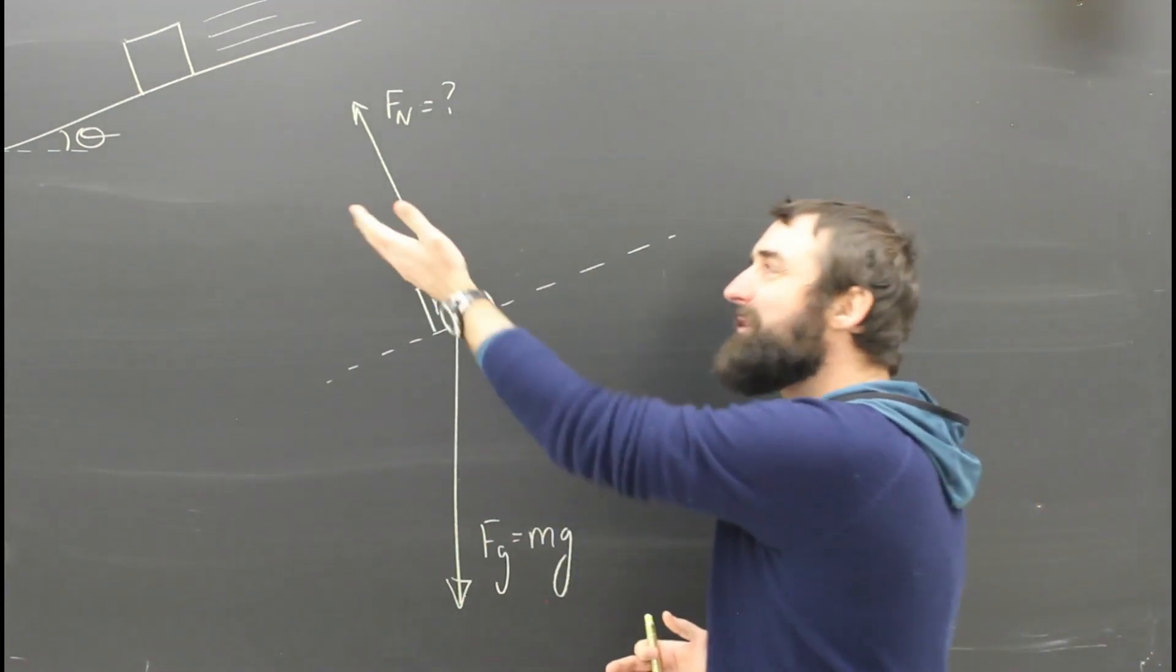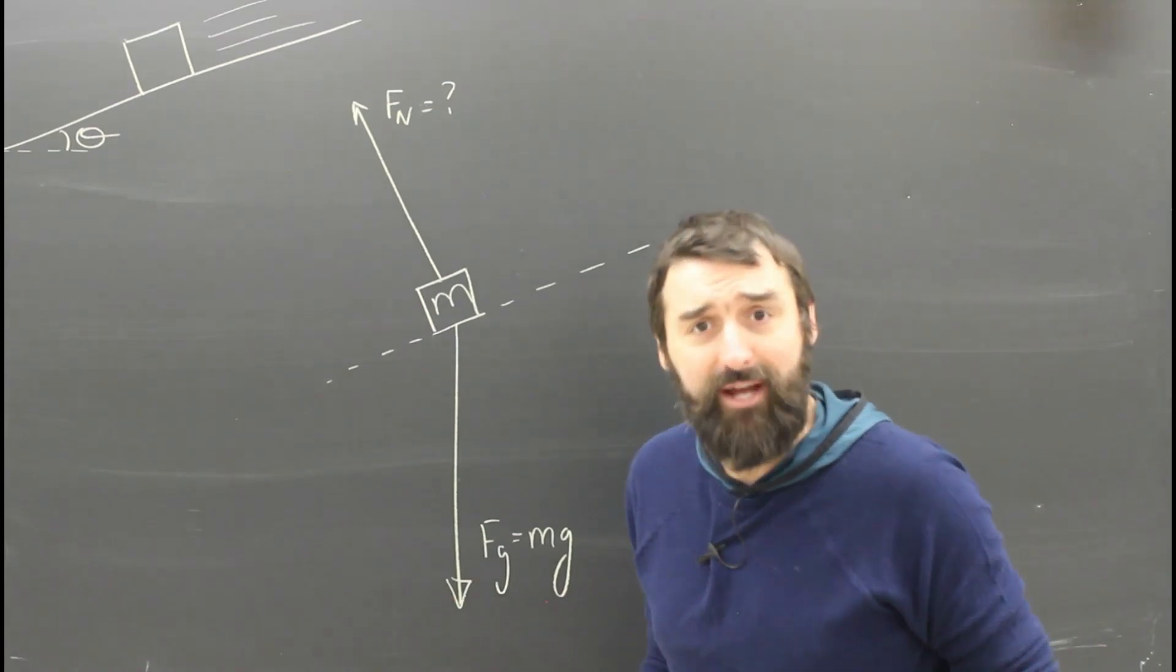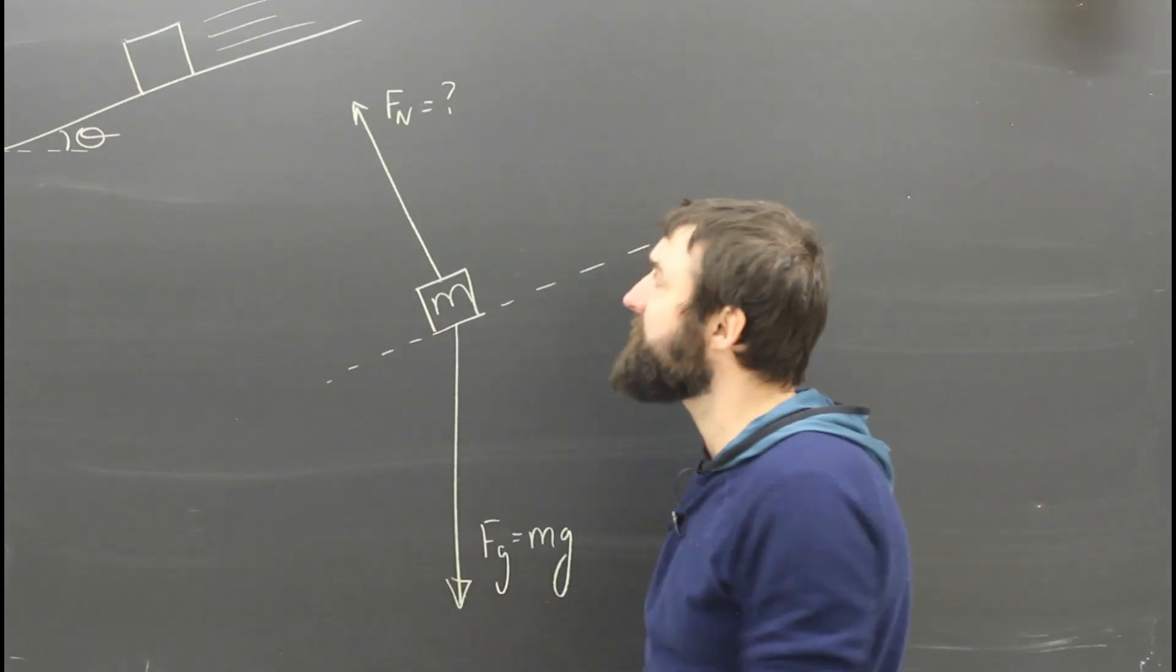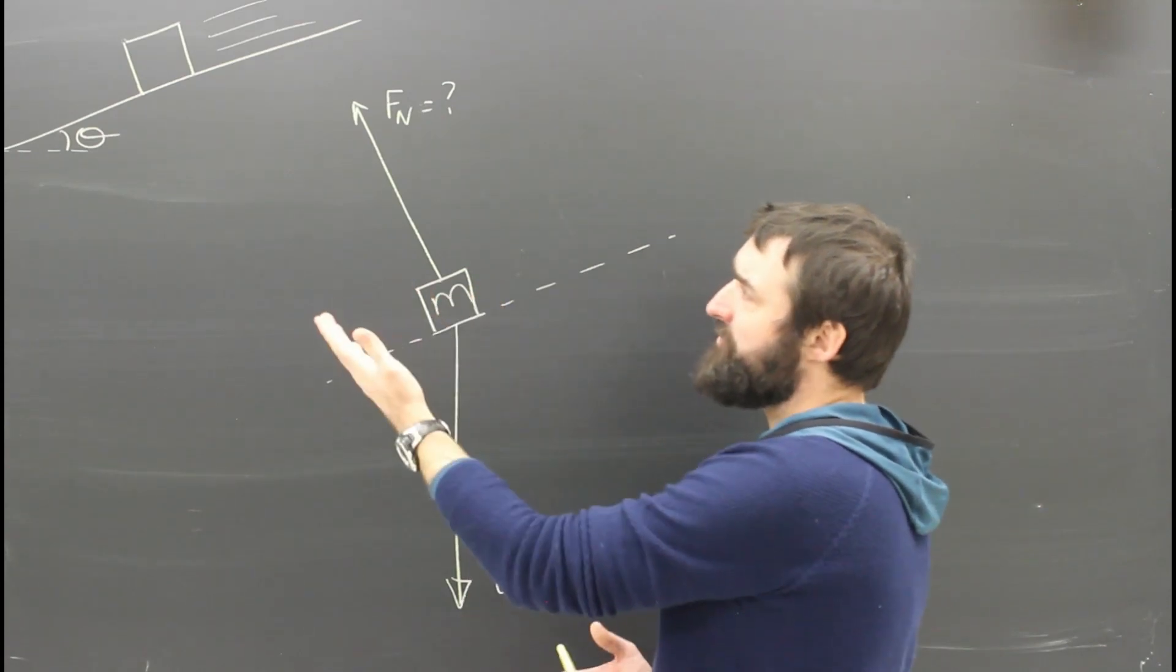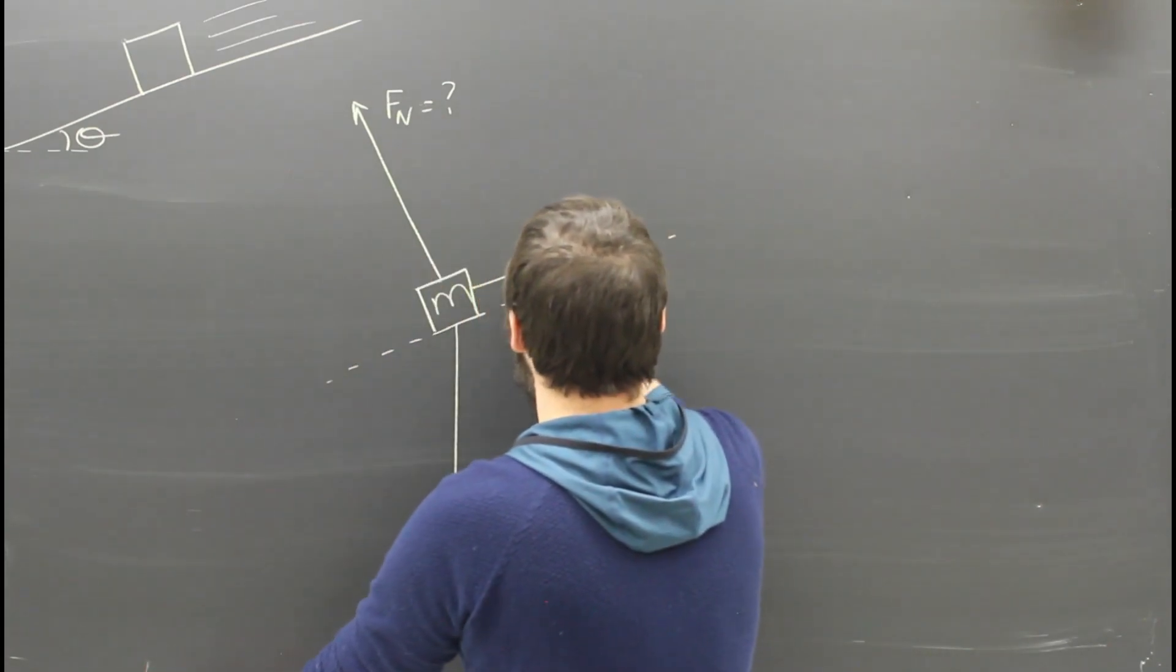Is there friction? If something slides down a ramp, yeah, for sure. Unless it's some kind of super slippery icy hovercraft situation, there's going to be friction. And which way is it? If this thing is sliding down the ramp, friction is going to be up the ramp.